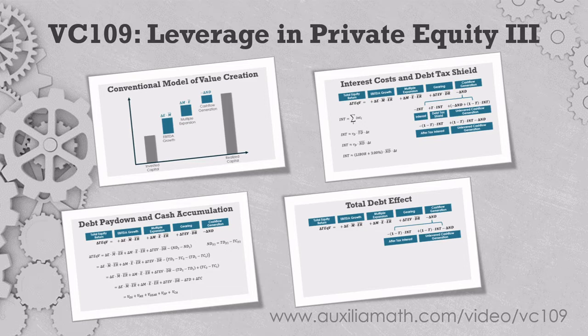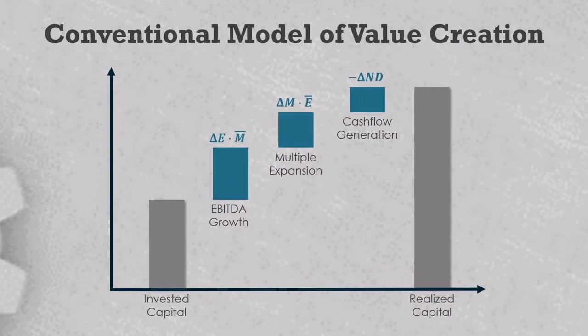Here we will take a closer look at that cash flow generation term and talk a bit about how these measurements should be interpreted. I need to bring this up because occasionally you will see a naive interpretation of the conventional value bridge, where EBITDA growth is attributed to operational improvements, multiple expansion is attributed to the market, and what we call the cash flow generation term is often attributed to financial engineering or financing risk.